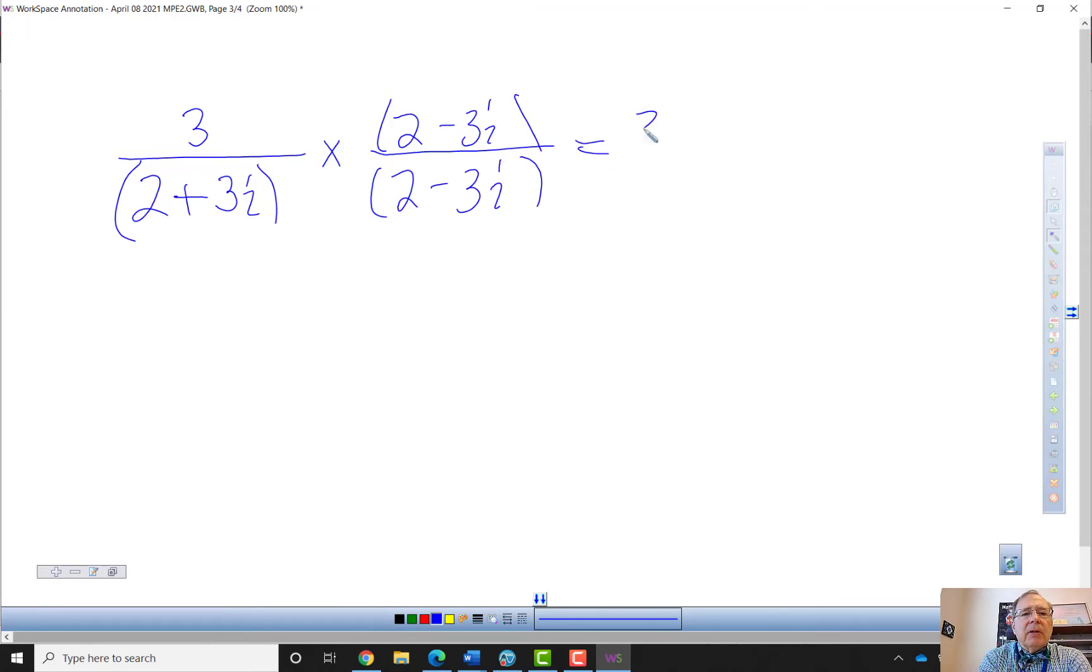So here this is going to be three times two minus three i. And now we're going to use the difference of two perfect squares working in reverse. Two times two is four.